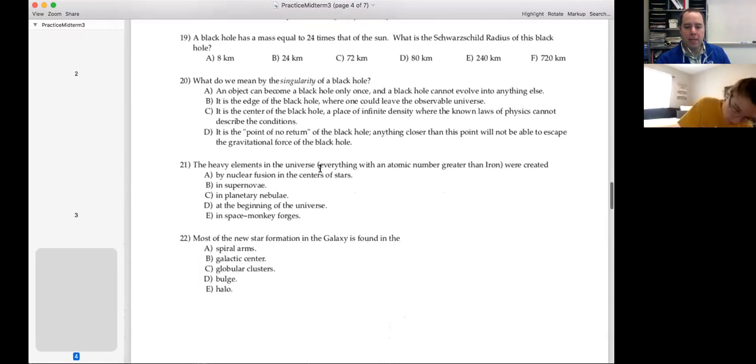The heavy elements in the universe, everything with an atomic number greater than iron were created in supernovae. Oh, right. You can't, iron is the biggest thing you can make in the centers of stars because to make anything more massive requires energy. You don't get energy out. Planetary debris doesn't make anything. The beginning of the universe did make a few things, but it's almost all hydrogen and helium with a smattering of other very light elements. And obviously E is not the right answer. So.